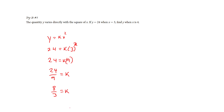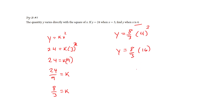I reduce that and get 8 over 3 for my k. Now I know the constant, so I can solve any problem related to this relationship. I say y equals 8/3 times x², and now they want to know what y is when x is 4, so I put that in and square it. That becomes 16, and with a little calculator help, y is 128 over 3 — that's the best we can do.